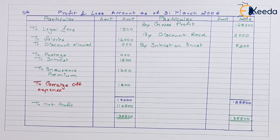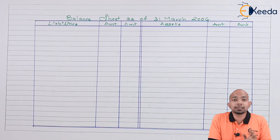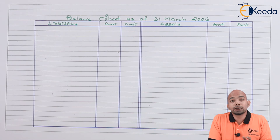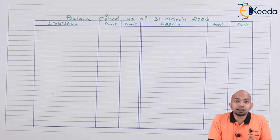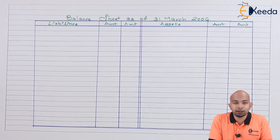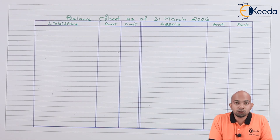Unlike trading and profit and loss account, the balance sheet doesn't have debit and credit sides — it has liabilities and asset sides. First, we'll post the two necessary items: capital less drawings, and then add the net profit from the profit and loss account — that means reserves or the net profit earned — after which we'll look at the closing stock from the adjustment.